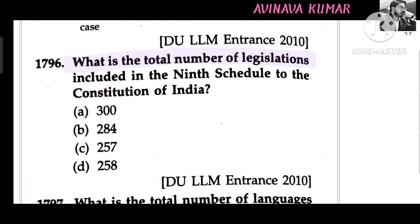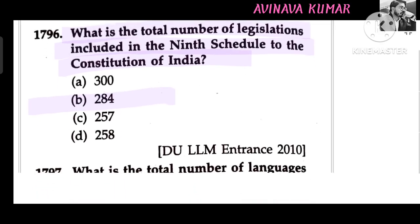What is the total number of legislations included in the 9th Schedule to the Constitution of India? Answer: 284.